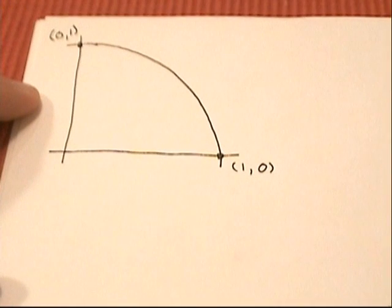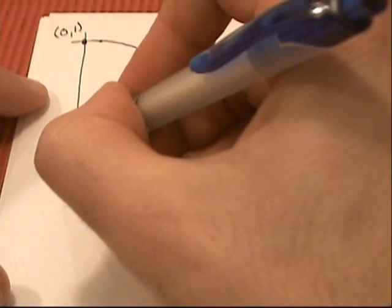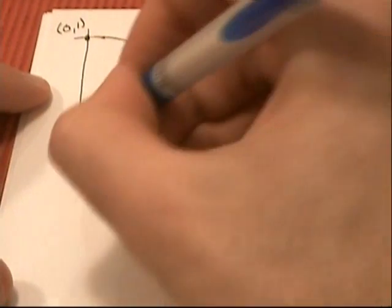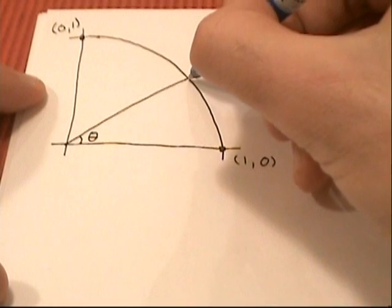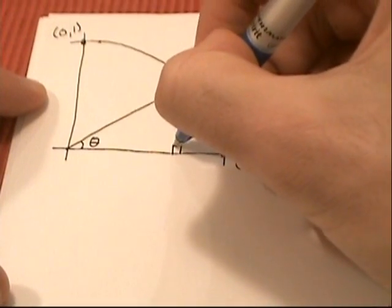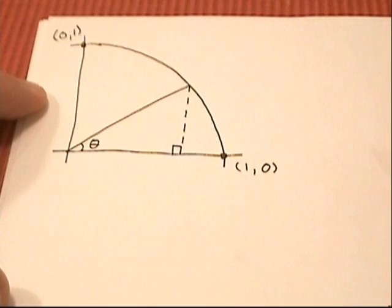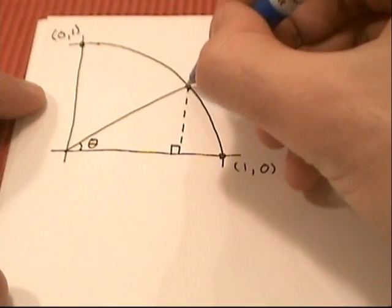From the origin we just draw any angle we want and we call that angle theta. Then we drop a perpendicular line like this, and now we have a right triangle. What we're interested in is this coordinate here, this point, which is just some x,y coordinate.